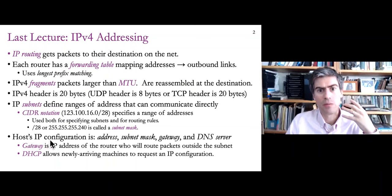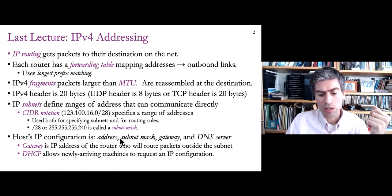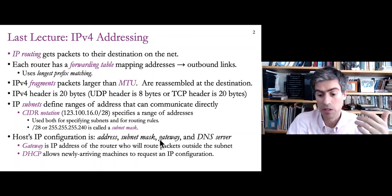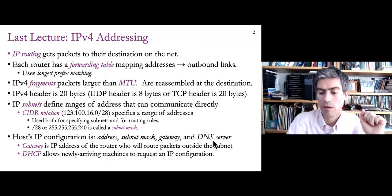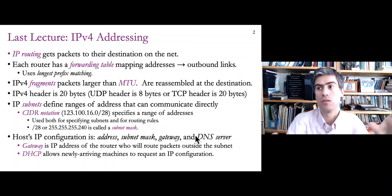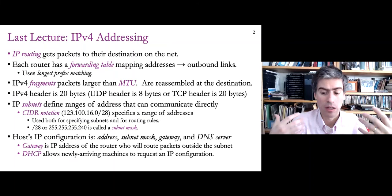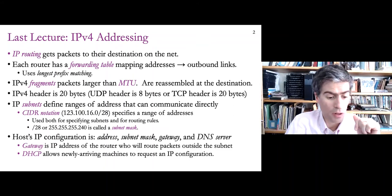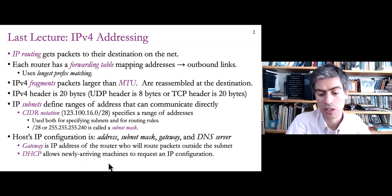There are four pieces of information a machine needs to communicate on the internet. It needs its own IP address; it needs a subnet mask to determine which machines it can contact directly. For machines outside its subnet, it needs to send packets to a gateway, and it needs that gateway's IP address. The fourth thing is the IP address of a DNS server so it can use user-friendly host names instead of IP addresses to contact websites.